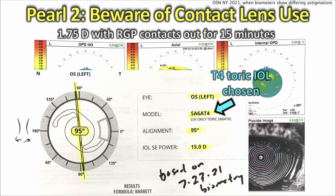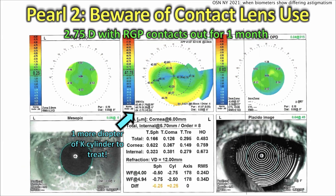So let's do the calculations. Based on the initial biometry we do the calculations and it says we'll do a T4 toric lens — that's going to correct about 1.5 diopters or so of astigmatism. We're ready to book the surgery, but then you say let's retry this — let's keep the contact lens out for a month or so. Now, same patient, and the patient now has 2.75 diopters of astigmatism with the RGP contacts out for a month.